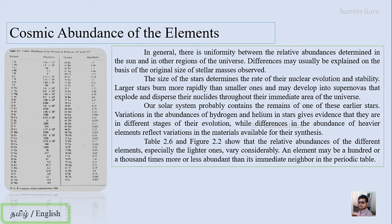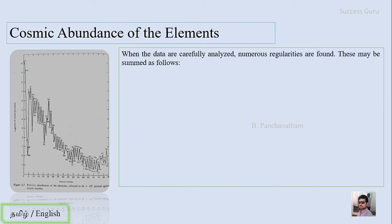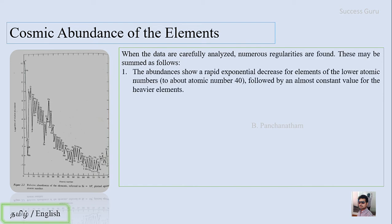The abundance of different elements, especially the lighter ones, varies considerably. The first observation: abundance shows a rapid exponential decrease for elements of lower atomic number, followed by an almost constant value for heavier atomic numbers. On a graph with atomic number on the x-axis and abundance on the y-axis, this trend is clearly visible.